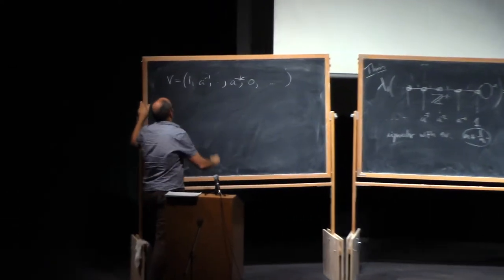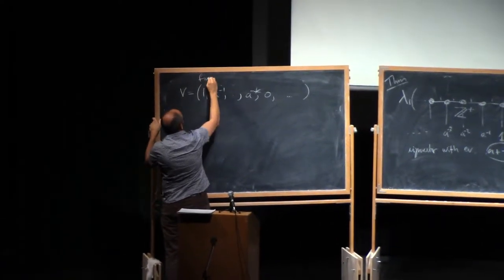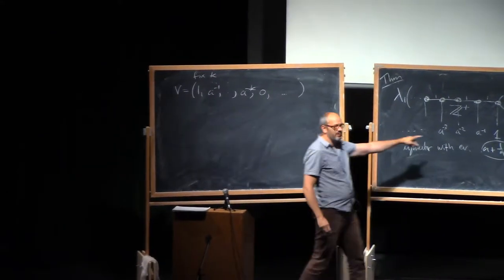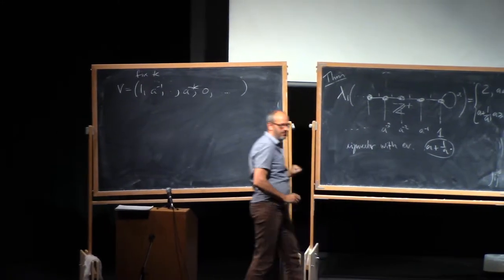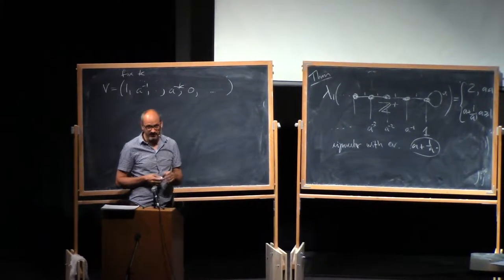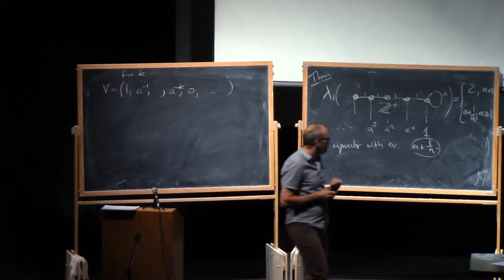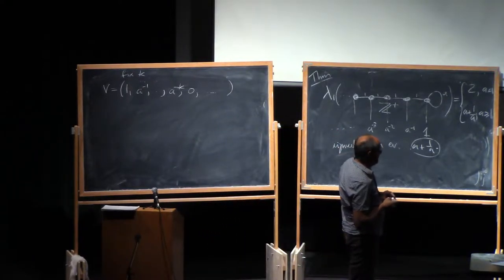Okay, so there's some fixed k. So you can see where it comes from, right? It comes from this picture here. That's going to be roughly what the eigenvector of this operator should be that corresponds to the top eigenvalue.